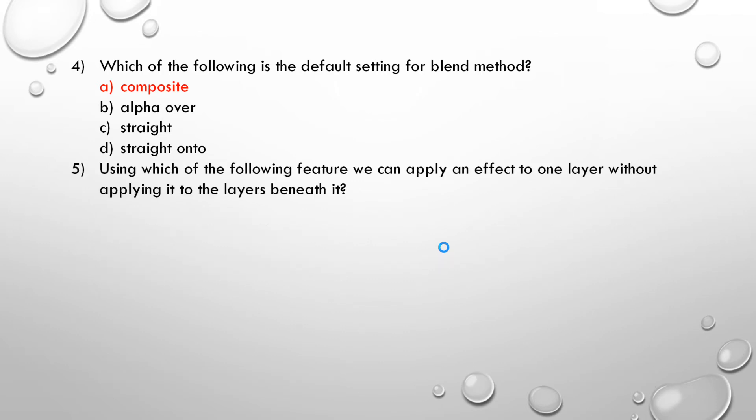Fifth question. Using which of the following features can we apply an effect to one layer without applying it to the layer beneath it? A. Encapsulation. B. Group. C. Element. D. Parameter. Correct answer is encapsulation. That means grouping things together.